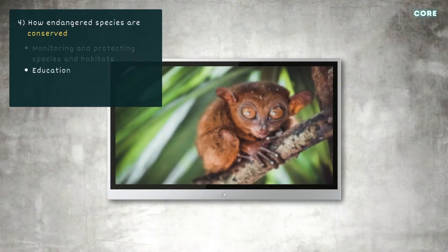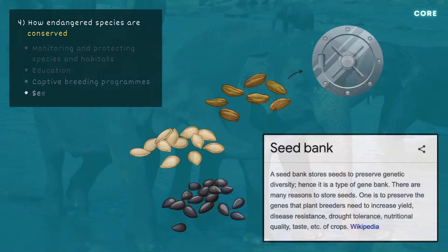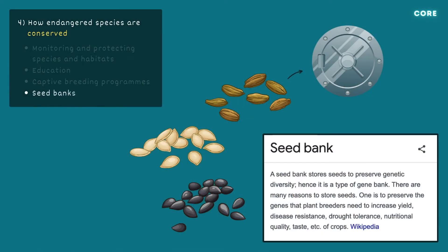Education: the media plays a role in raising awareness of the importance of endangered species and the ways in which they can be conserved. Captive breeding programs: animals under threat of extinction may be bred in captivity to raise their numbers before being released back into the wild. Seed banks: seeds are stored as a way of protecting rare and important species of plants from extinction.